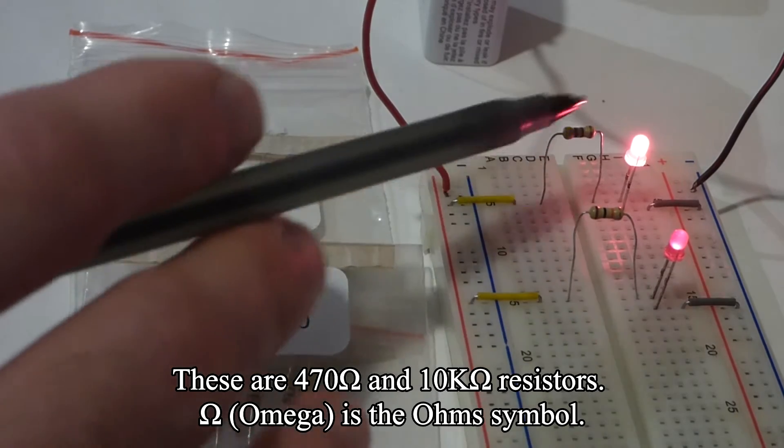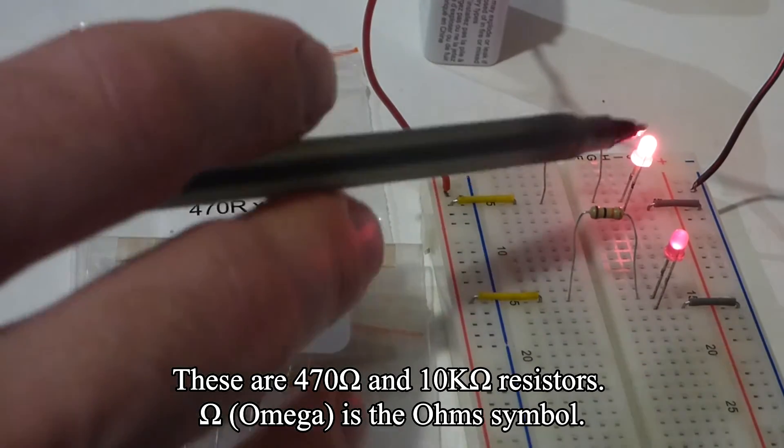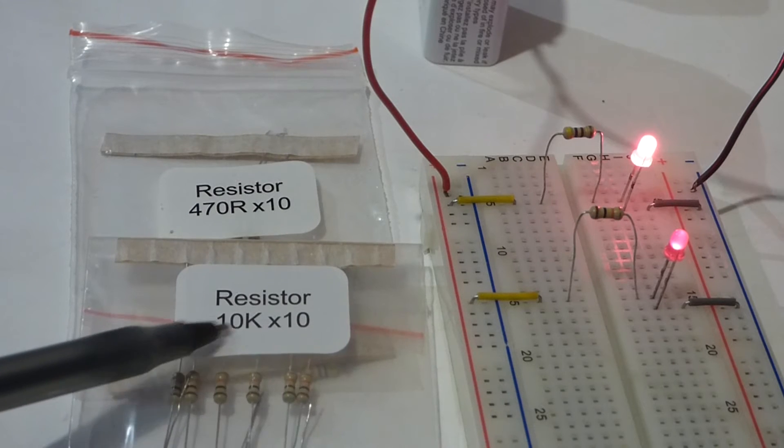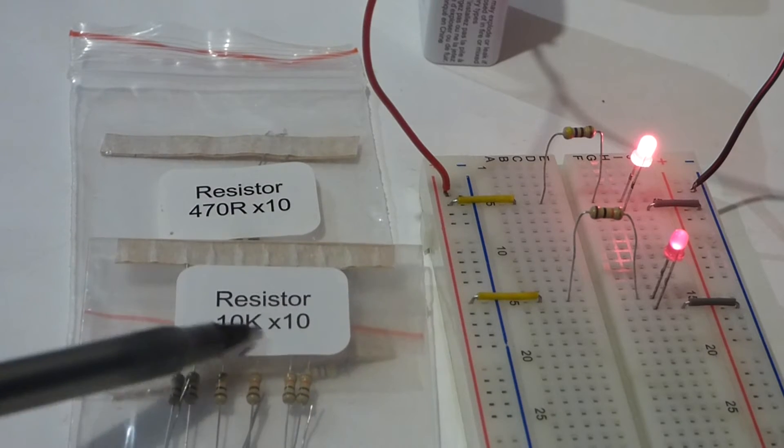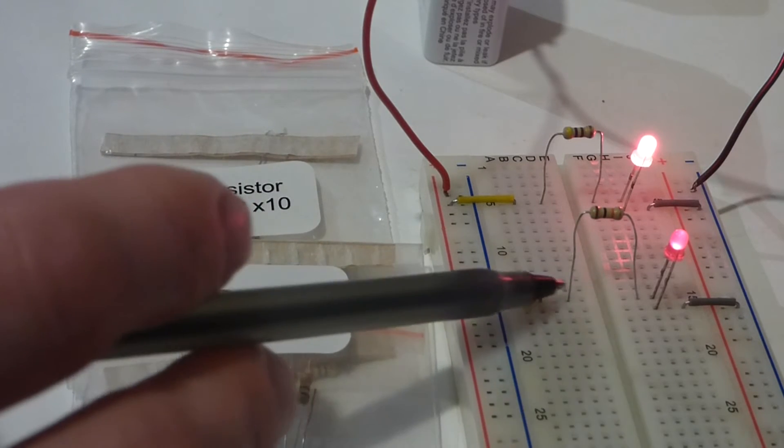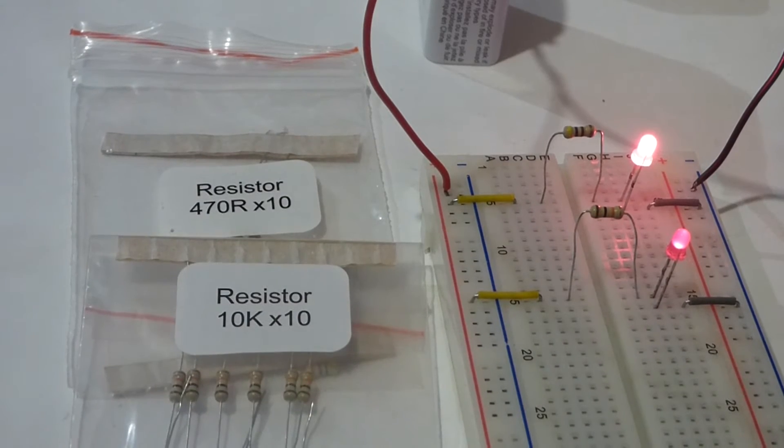So this one's 470 ohms, it's letting through quite a bit of current and the LED is bright. Whereas this is 10 kilo ohms, 10,000 ohms, and so it's not letting as much current through and it's dimmer.